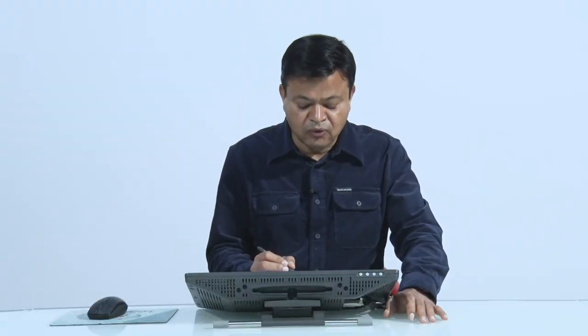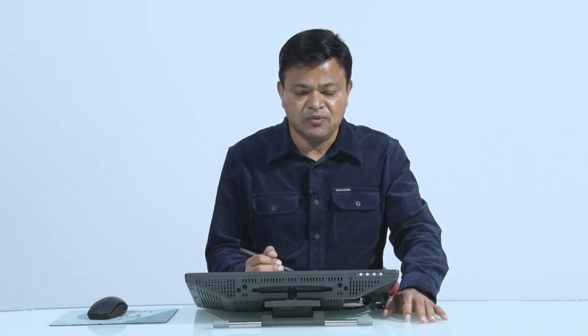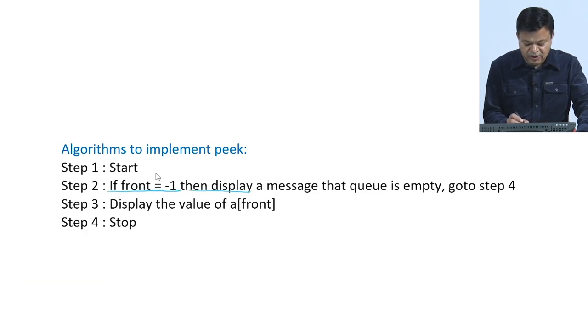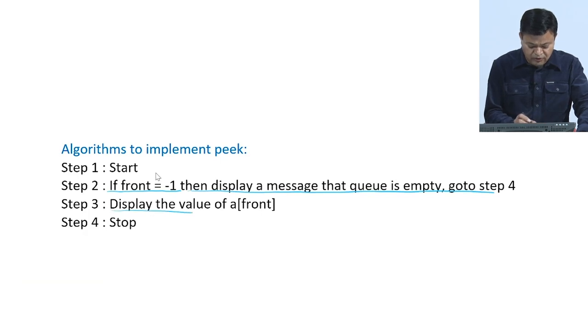The last algorithm is peek, which simply prints the value of the front element. If front equals minus 1, it means the queue is empty, so we display 'queue is empty'. Otherwise, we just print the value of a[front]. This is the complete algorithm to implement peek.